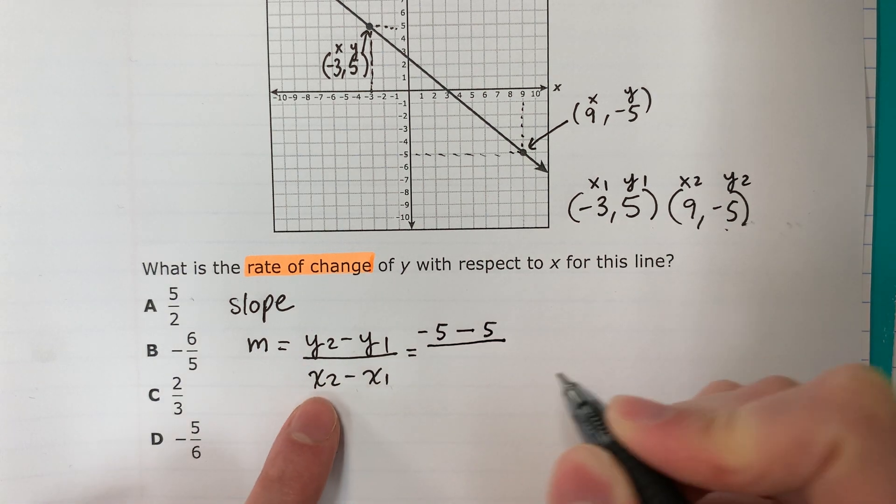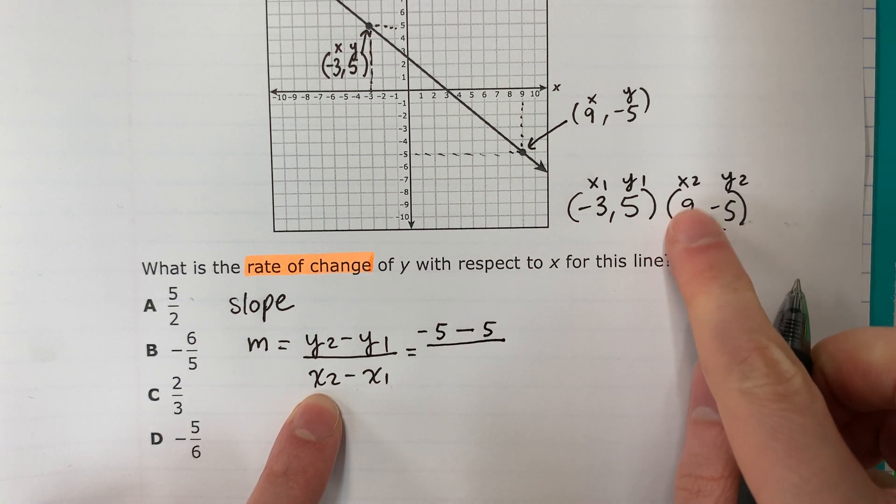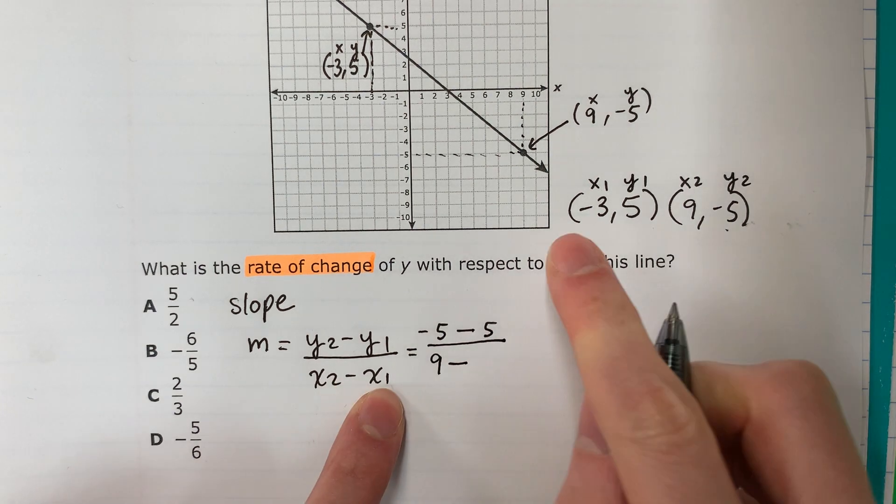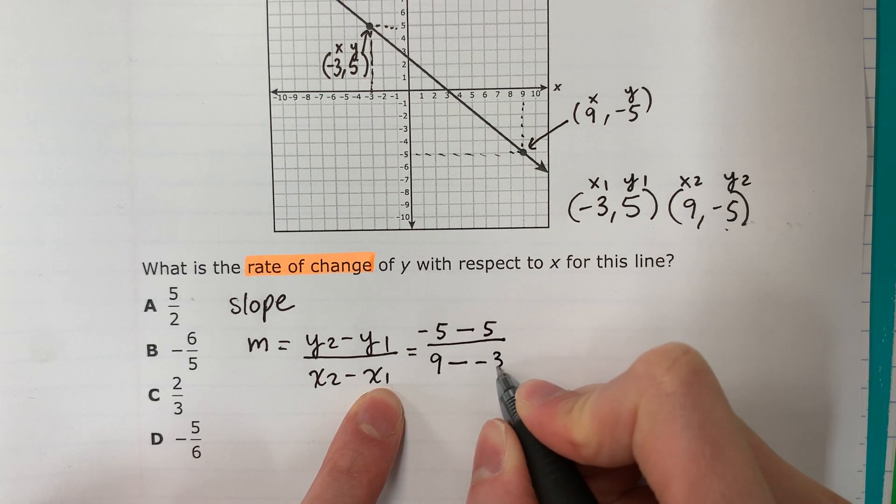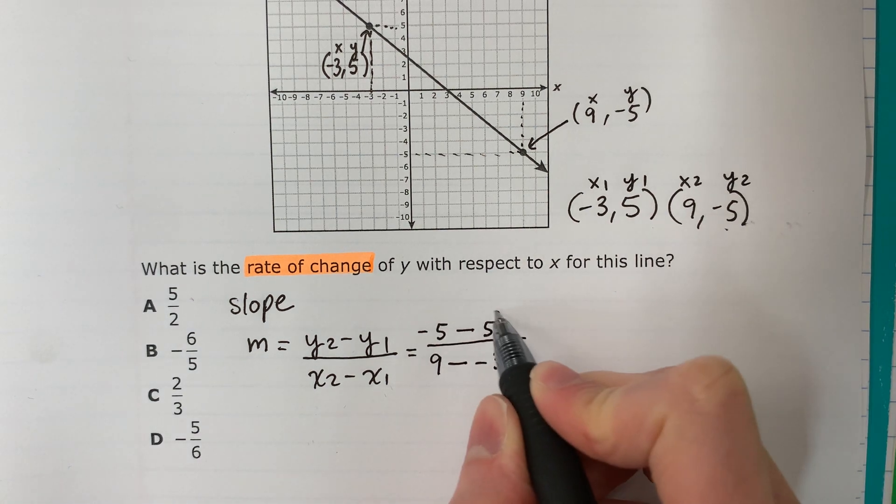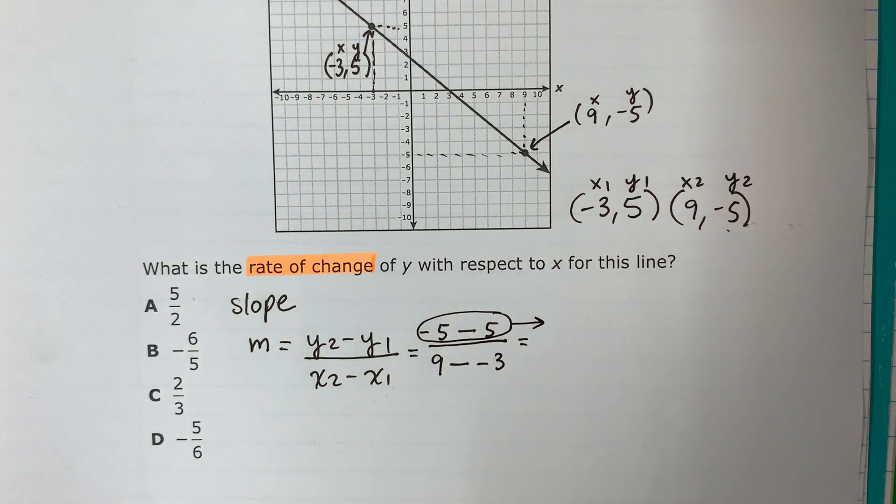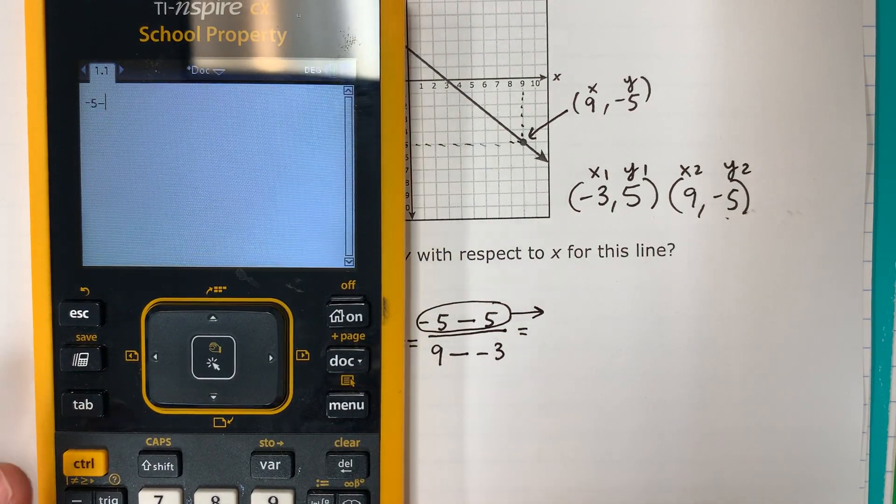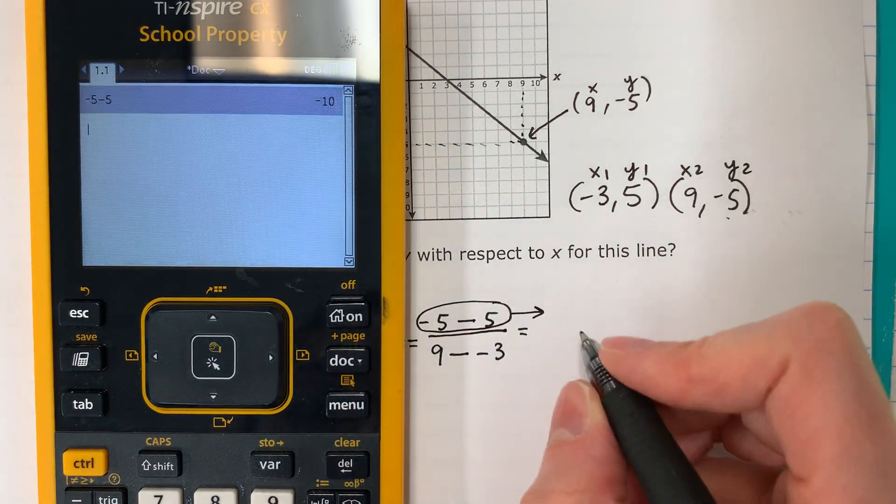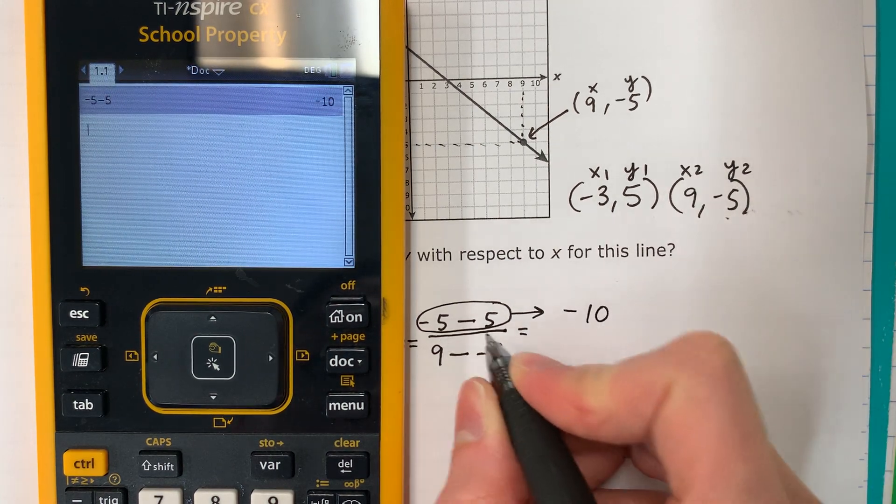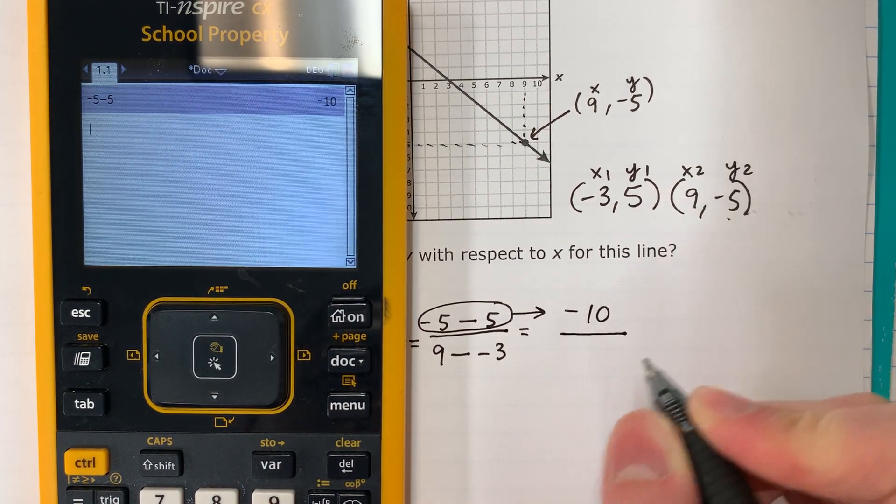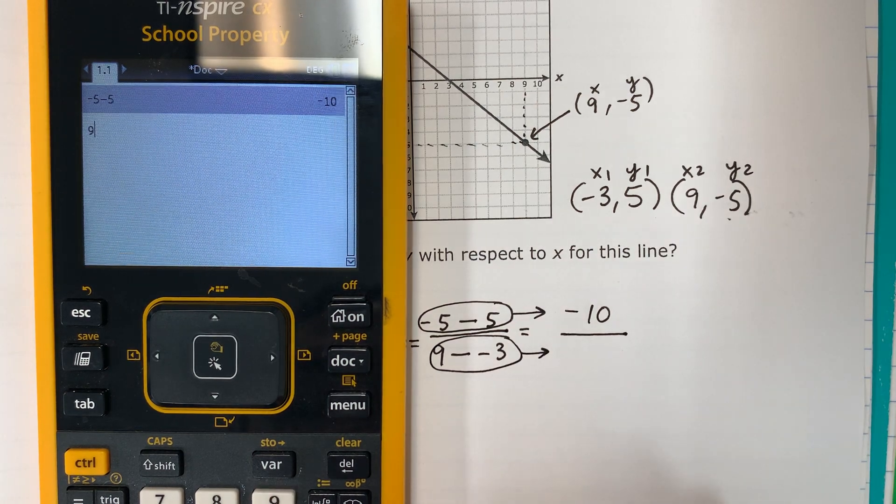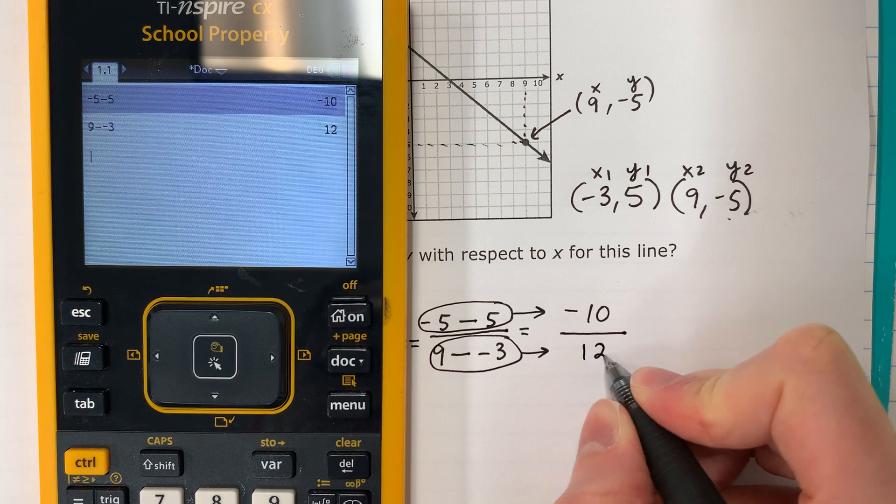Minus y1 is 5. Divided by x2 is 9. Minus x1, negative 3. We're going to put the top in the calculator. Negative 5 minus 5. That is negative 10. Copy your division. Now 9 minus minus 3. 9 minus minus 3. That is 12.